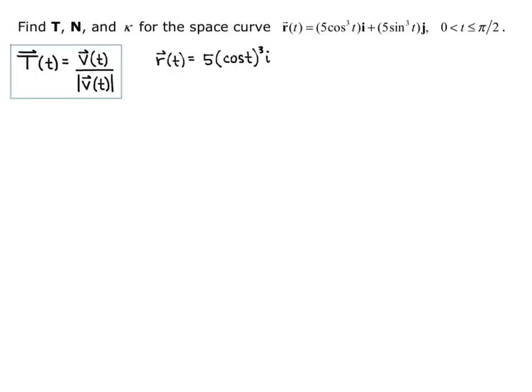as 5 cosine of t quantity cubed i. All I'm doing is rewriting it in a form that will be easier to recognize how to use the chain rule, plus 5 parentheses sine of t quantity cubed j.